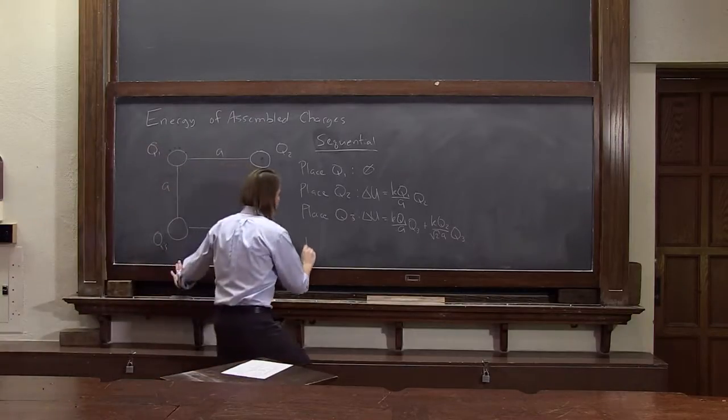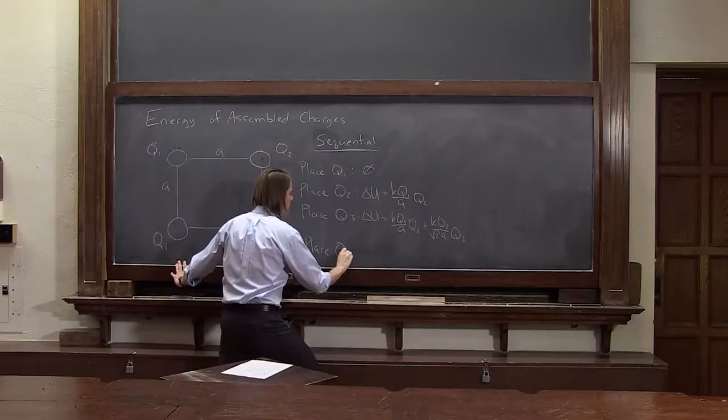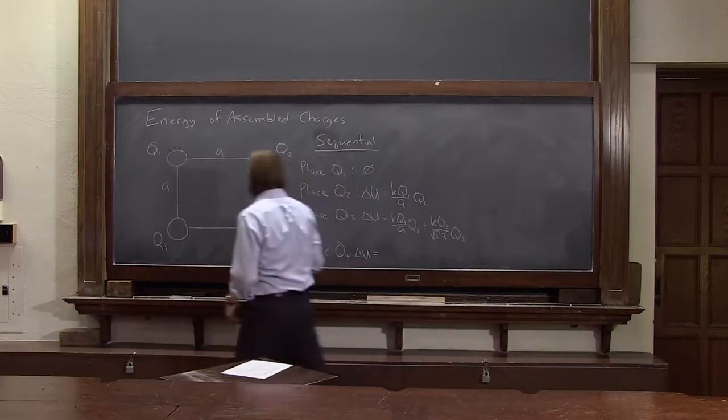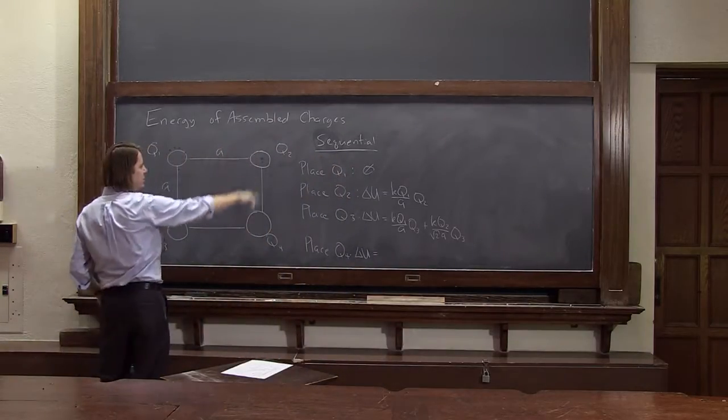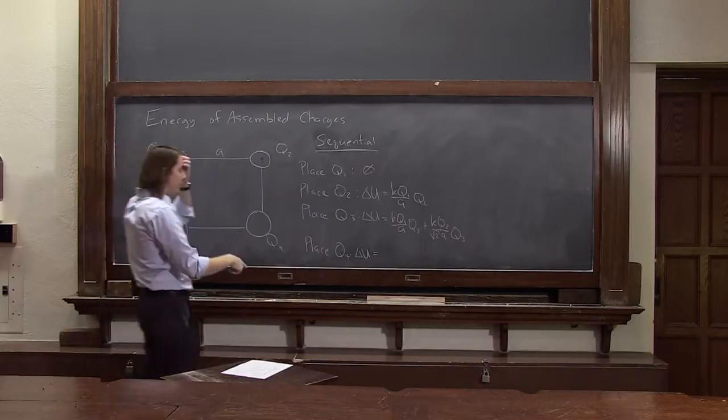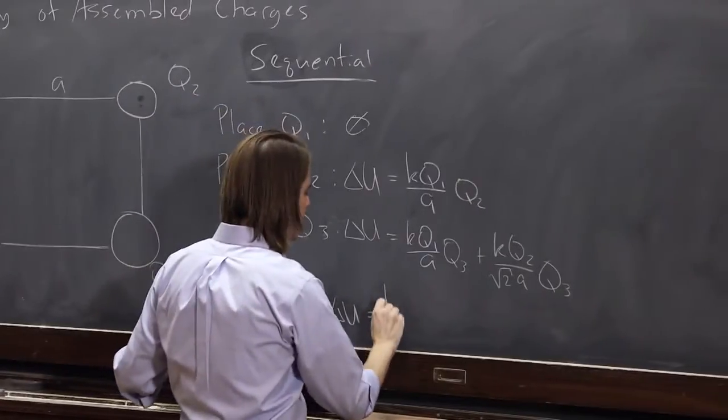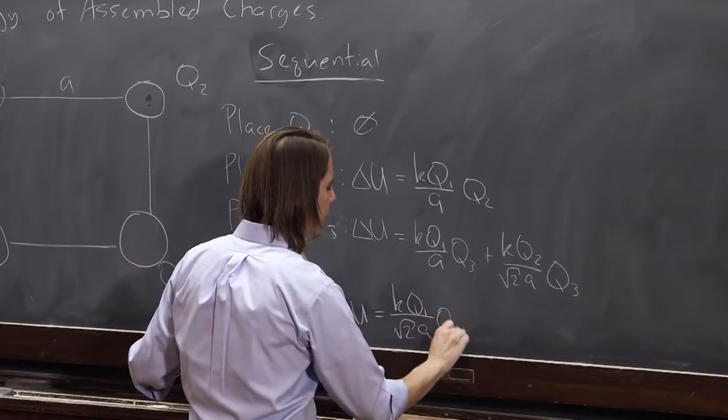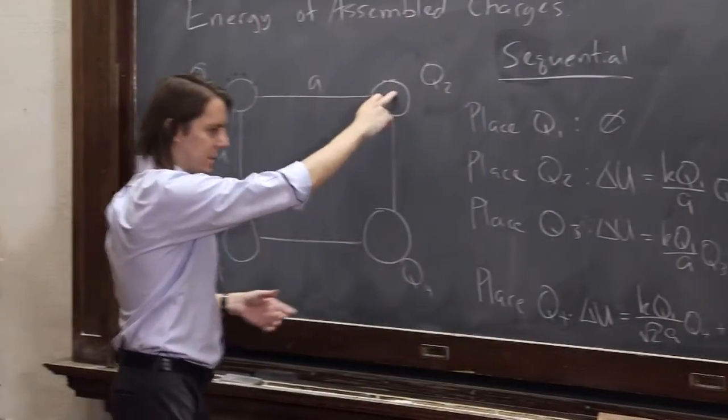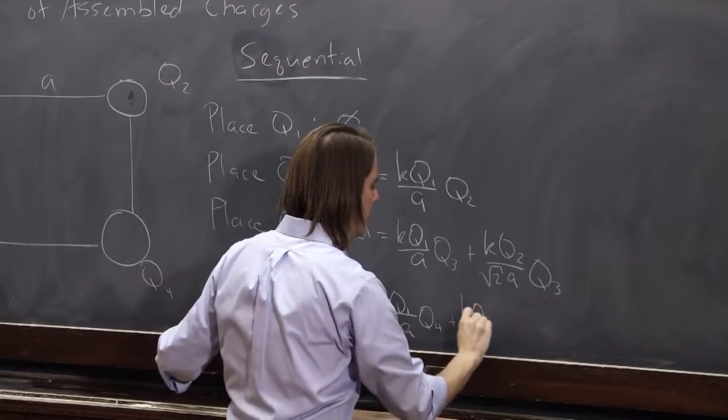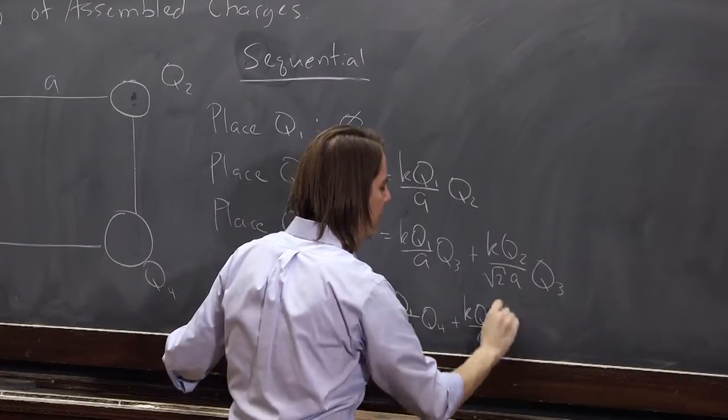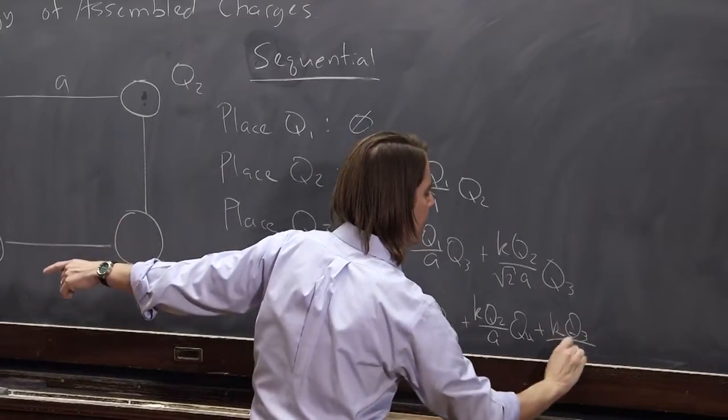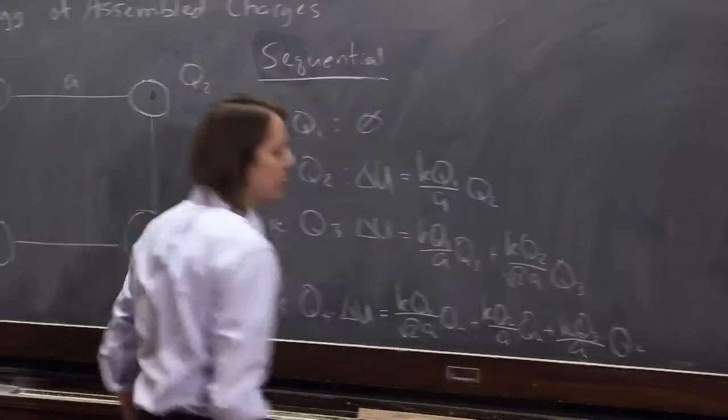And then let's finally place Q4. The delta U for Q4, now we're bringing it all the way in. We've got Q2, or Q1 is now farther away. Q1 is at the square root of 2 times A. So that's K Q1 over the square root of 2 times A times Q4 plus Q2 makes a potential. K Q2 over A, it's only a distance A away, times Q4 plus K Q3 at a distance A times Q4. Yikes.